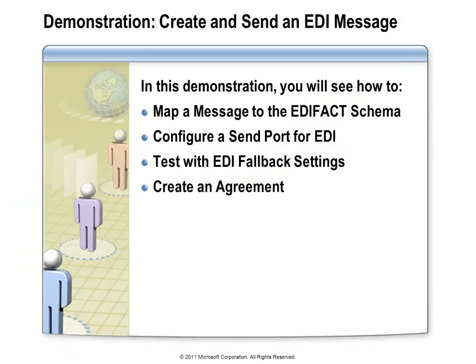In this demonstration, we're going to see how to map a message to the right schema. We're going to configure a send port for EDI and then test that with the fallback settings, and also create an agreement to see what happens when we have specific settings. We'll go from the BizTalk message that may not have originated as EDI, provide a standard BizTalk map to get to an EDI schema that the assembler knows how to read and process to serialize the message correctly.